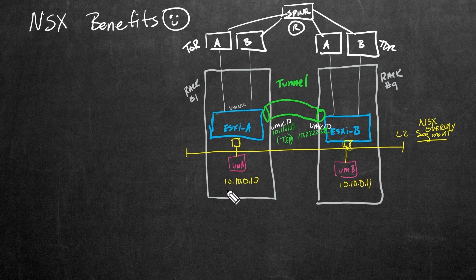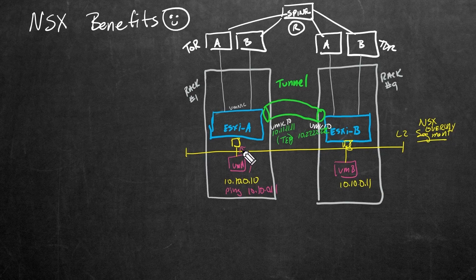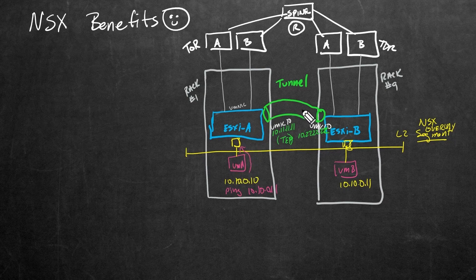Over here at VM A, if it did a ping to 10.10.0.11, that traffic would be forwarded out of the VM into this port group. ESXi would see it, recognize that it came in on this layer-two NSX overlay segment, then take that entire frame — layer two and everything higher — that this client was sending, encapsulate it, and route it through the tunnel over to ESXi B.